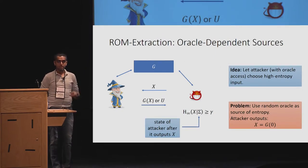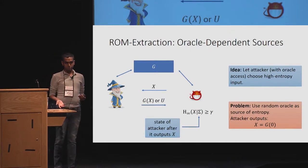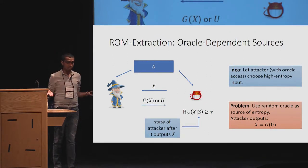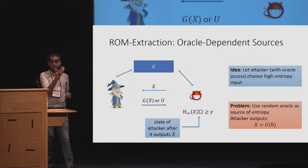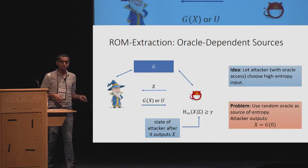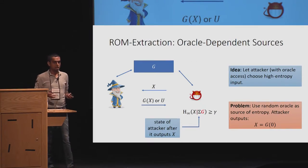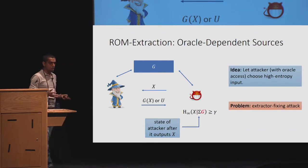More formally, the problem is that the attacker has to forget something. So how do we capture it? The condition would now, we can condition it on the state of the adversary just after it provides X. But the problem here would be that we can use a random oracle as a source of entropy. What it means is that the attacker merely provides X as G of 0. So the state is null. But clearly, this is not a fix that we are happy with.